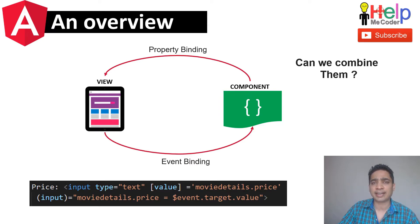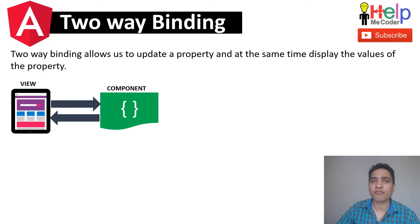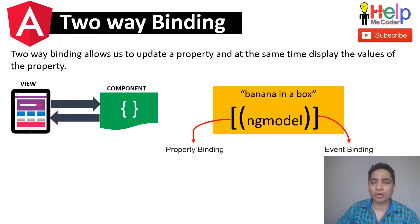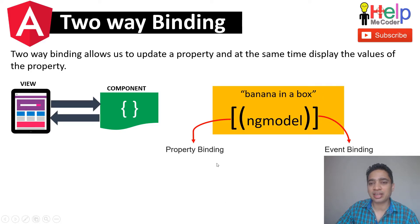ngModel is a directive used for two-way binding. It allows you to update a property and at the same time display its value on the view side — both operations with a very small syntax. The syntax uses square brackets with parentheses inside, which looks like a 'banana in a box,' widely known in the Angular community. You can see this combines property binding syntax and event binding syntax together, with ngModel as the directive.